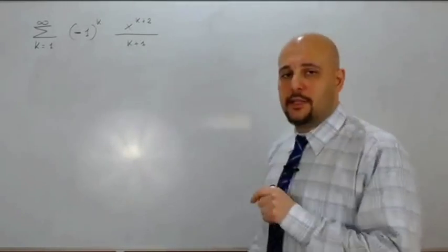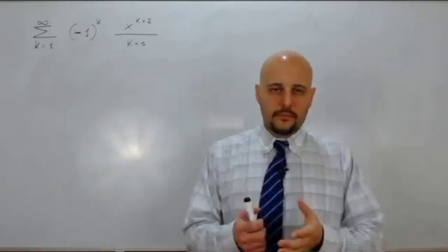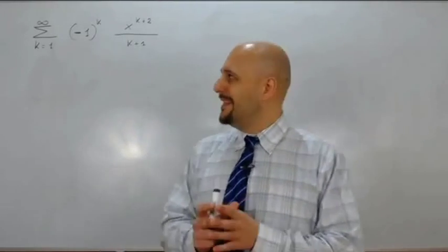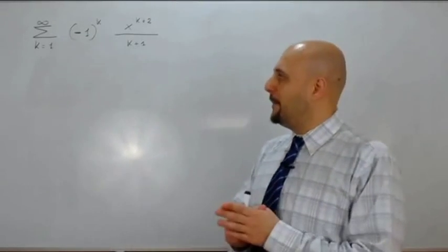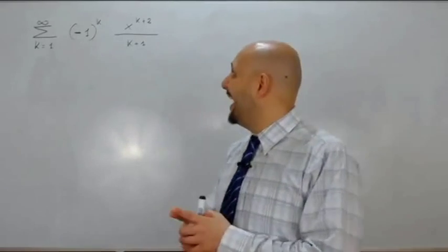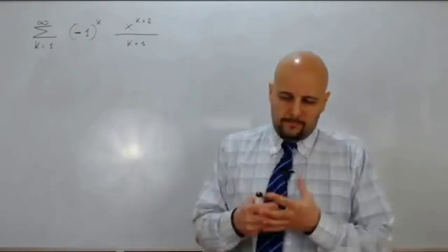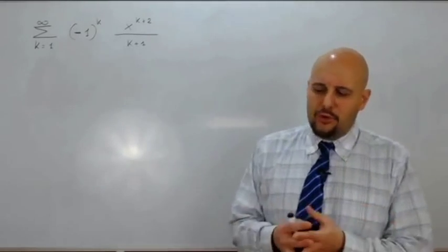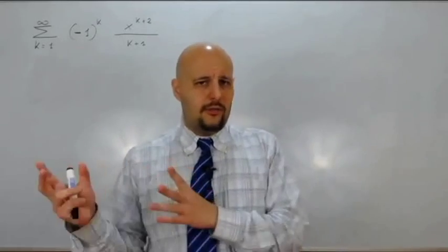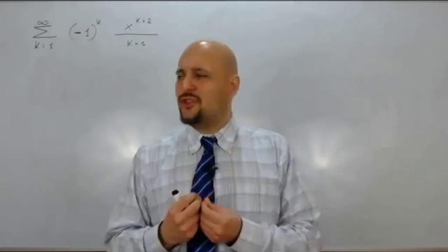Passiamo al secondo esercizio: determinare l'insieme di convergenza puntuale e la somma della seguente serie, sommatoria per k che va da 1 all'infinito di meno 1 alla k, che moltiplica x alla k più 2 fratto k più 1. Dobbiamo ricondurci alla serie modello del logaritmo, ma come facciamo?